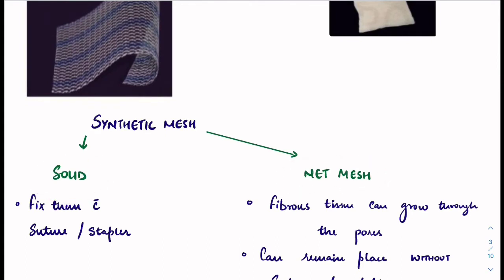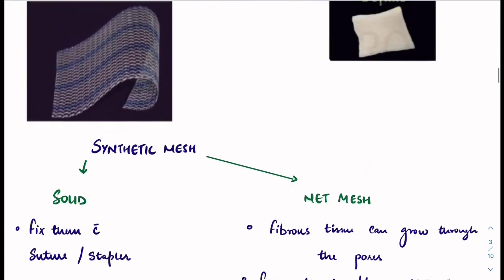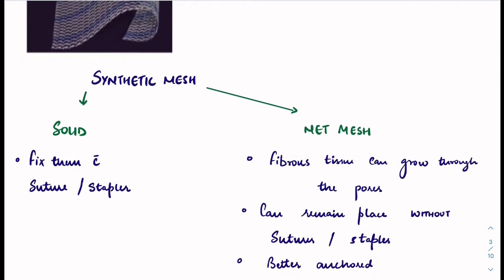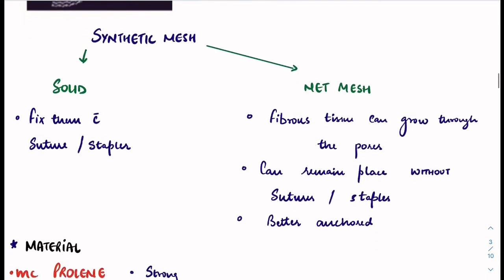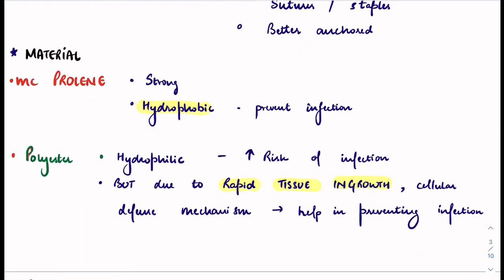Synthetic mesh can be solid or net mesh. Solid mesh has no holes and must be fixed with sutures or staplers. Net mesh has pores, allowing fibrous tissue to grow through them, so it remains in place without sutures or staplers — it is better anchored.